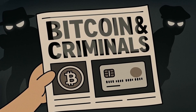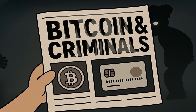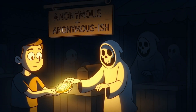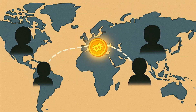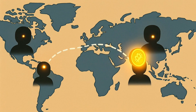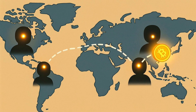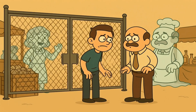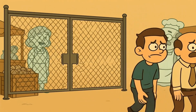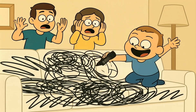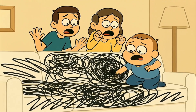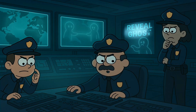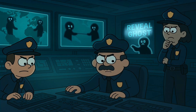So when you hear that Bitcoin is used by criminals, this is what they're talking about — the perfect pairing of an anonymous marketplace with an anonymous-ish currency. It allows a drug dealer on one side of the world to sell to a buyer on the other side, and the payment can happen without either of them ever knowing the other's real name and without a bank being able to stop it. It's financial eviction for the rule followers, creating a space where the rules simply don't apply. It's why law enforcement agencies have spent so much time and energy trying to figure out how to track Bitcoin transactions and unmask the ghosts.